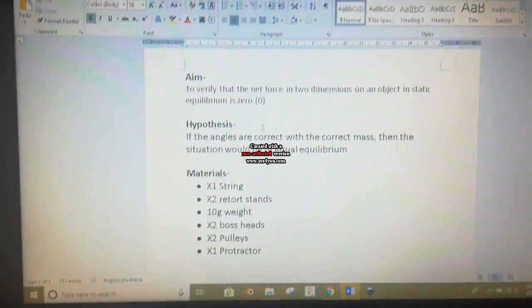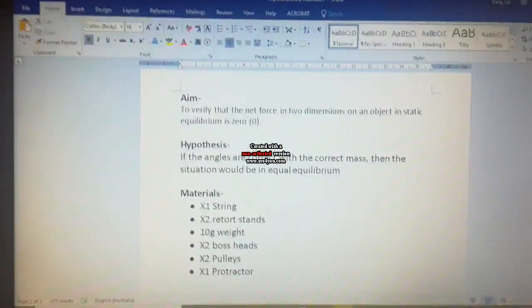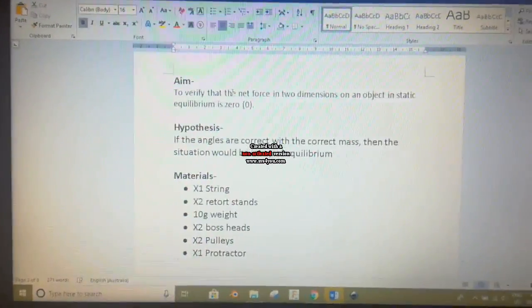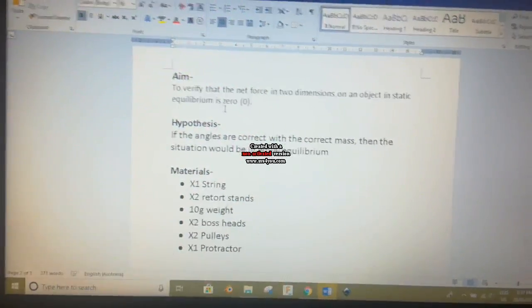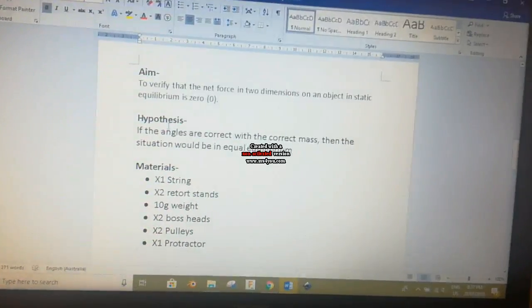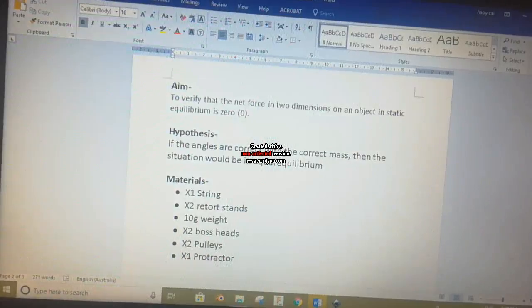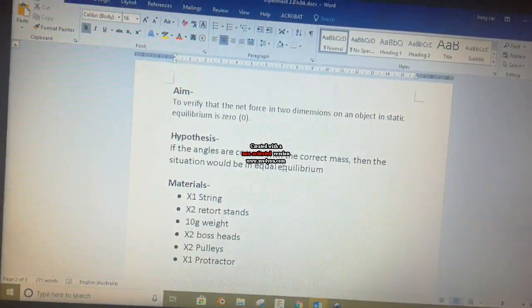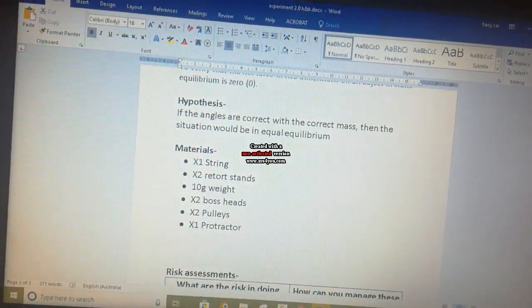Okay, if you want to see my scientific report, the aim is to verify that net force in two dimensions on an object in static equilibrium is zero. So the hypothesis is: if the angles are correct with the correct mass, then the situation will be in equilibrium.